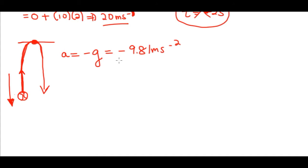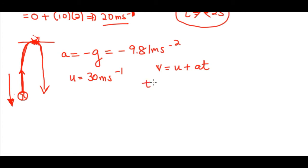When the ball stops at the top, it starts to fall. While going upward, the acceleration equals negative g because the motion is opposite to the direction of gravity. Negative g indicates retardation — the ball is decelerating. This equals approximately −9.81 meters per second squared. At the very top, the velocity is zero because the ball has stopped momentarily before reversing direction.